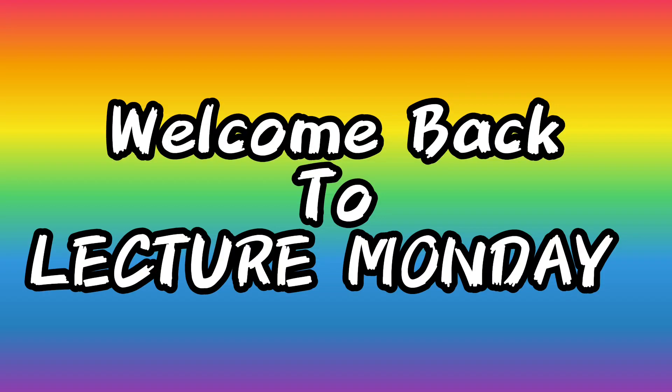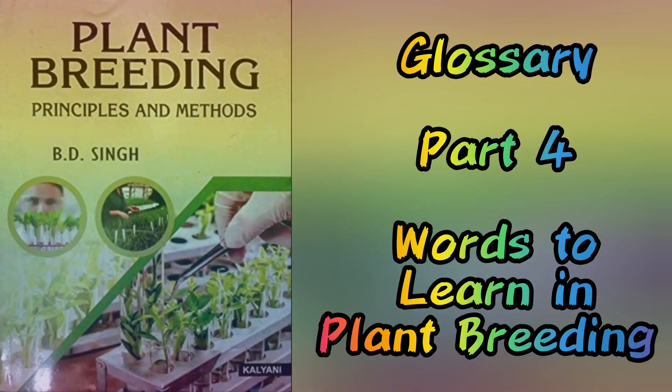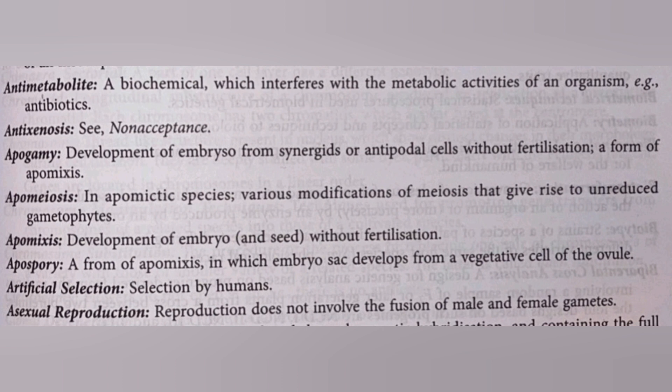Welcome back to my channel. Today is Monday and we are continuing with words or technical terms in plant breeding. The term is anti-metabolite — by the name only we can say something is going against the metabolic activities. So it is a biochemical which interferes with the metabolic activities of an organism.